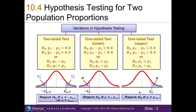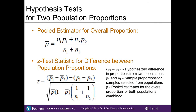As you can see in the visuals here, we're working with Z values. Just like in chapter nine, when we're working with population proportions, we are only working with Z values. We do not have to worry about T values at all.